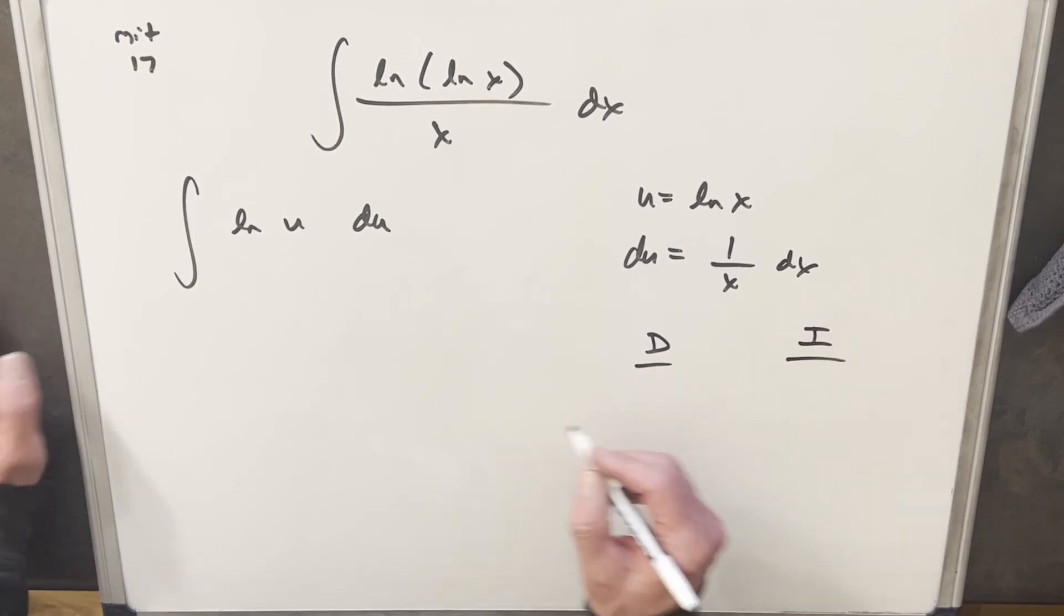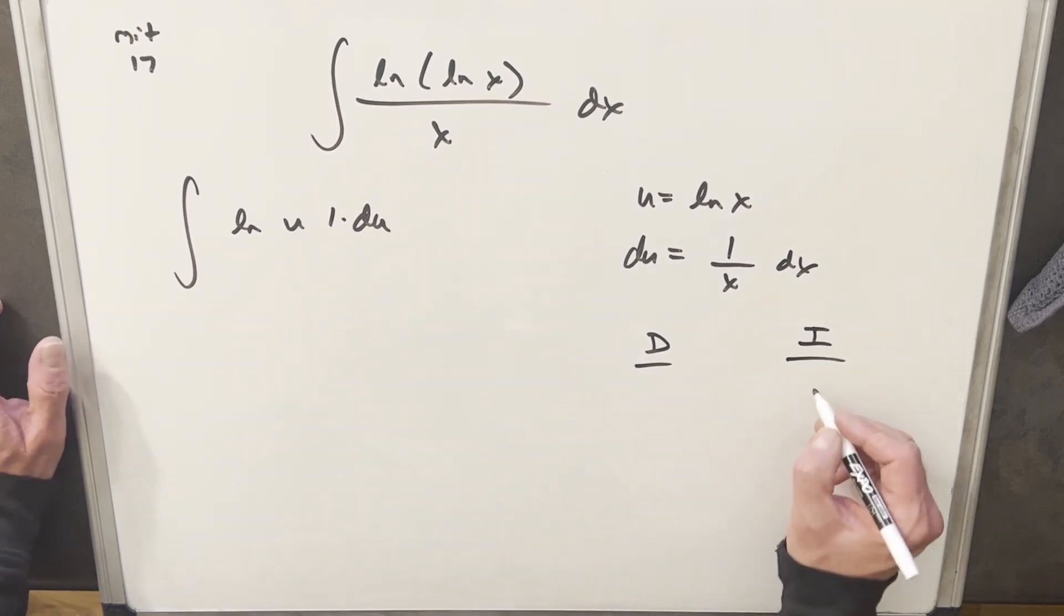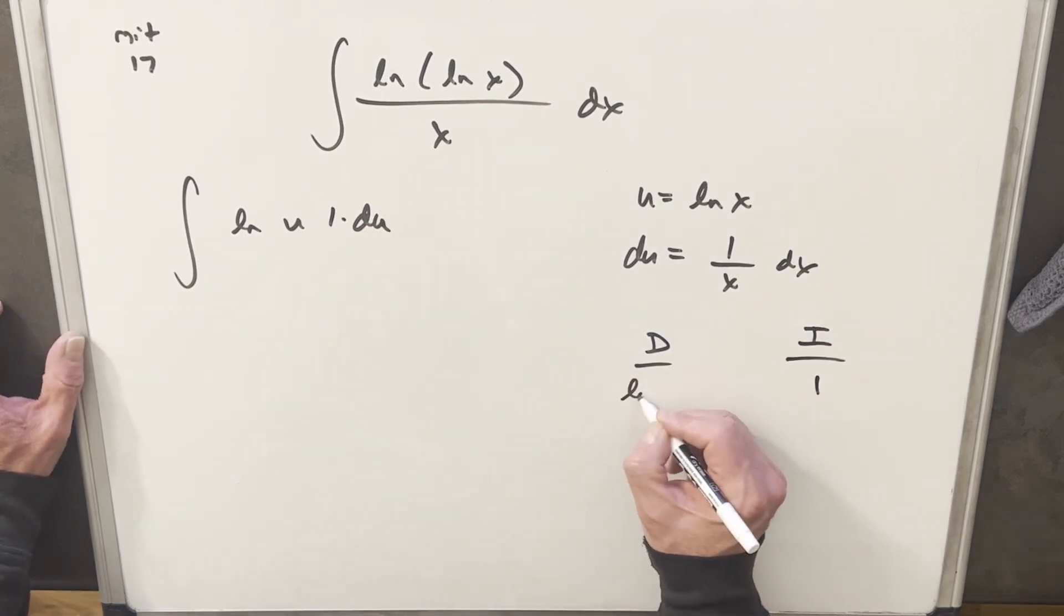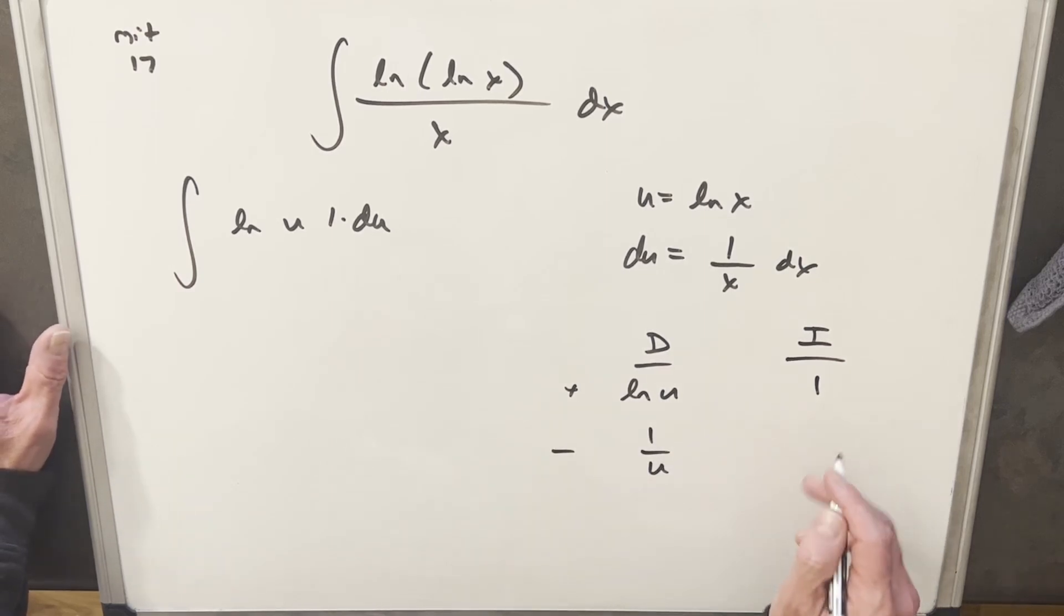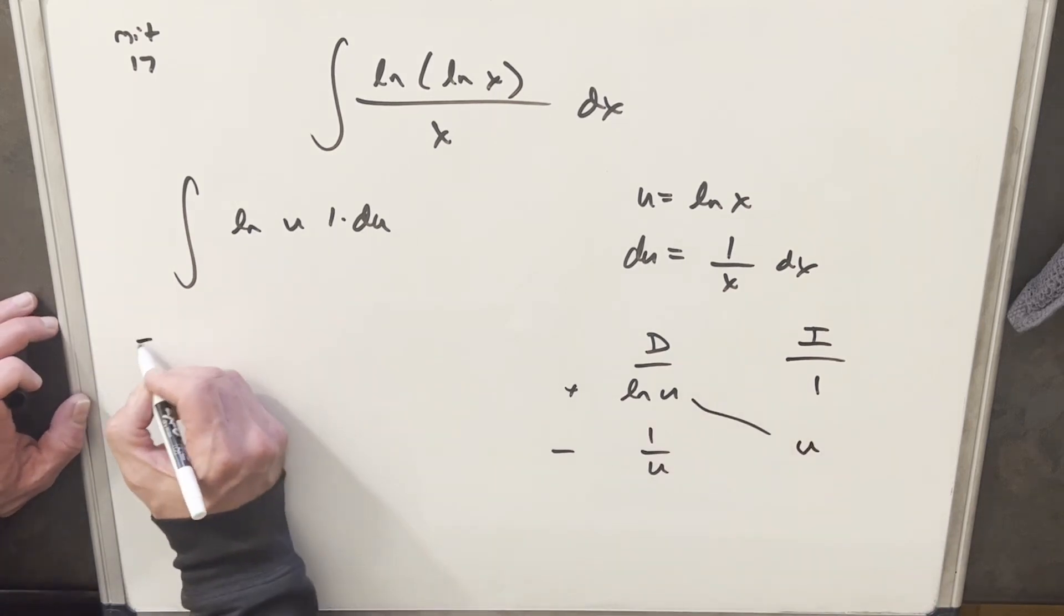So we're gonna differentiate. I'm gonna create like a 1 here. So I'm gonna integrate my 1 and differentiate natural log of u. Derivative of natural log of u is gonna be 1 over u. Integral here is just u.